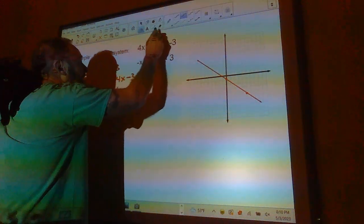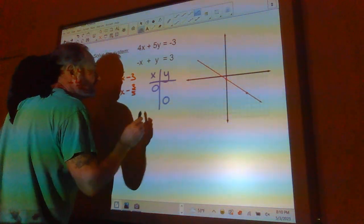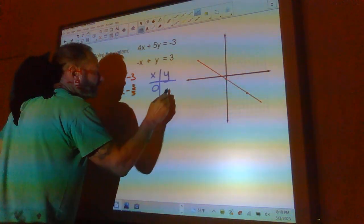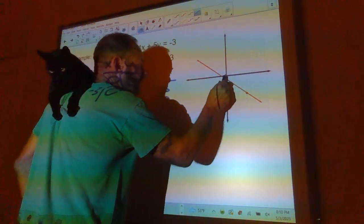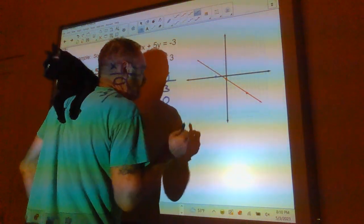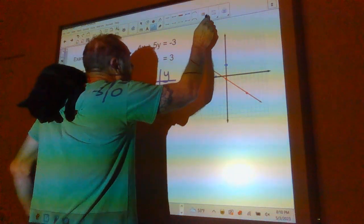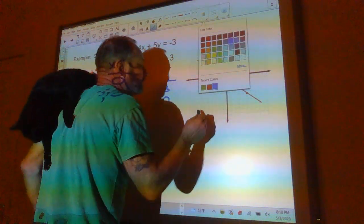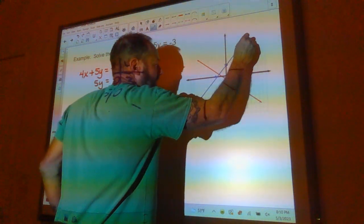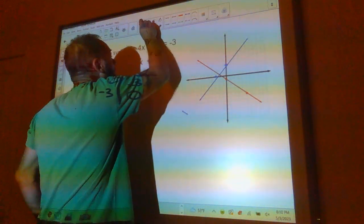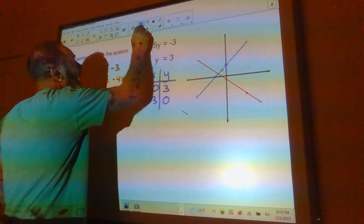Now my second line, this is an easy one to just do with a table. Find the zeros. 0 in for X means Y is 3. 0 in for Y means X is negative 3. So negative 3, 0 is right here. And 0, 3 is right here. I'm going to get a line. This time it's going to be a blue one. It's going to go like this.